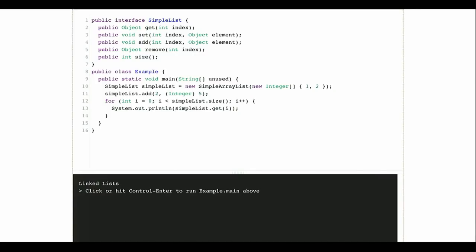We have two implementations of a common interface that are going to mean both our lists behave the exactly same way, but we're looking at trade-offs in terms of how the lists are actually implemented internally. The homework problems we've been doing for the last couple of days have been focused on an array list, and then right before break we introduced a different way to implement a list with different trade-offs.